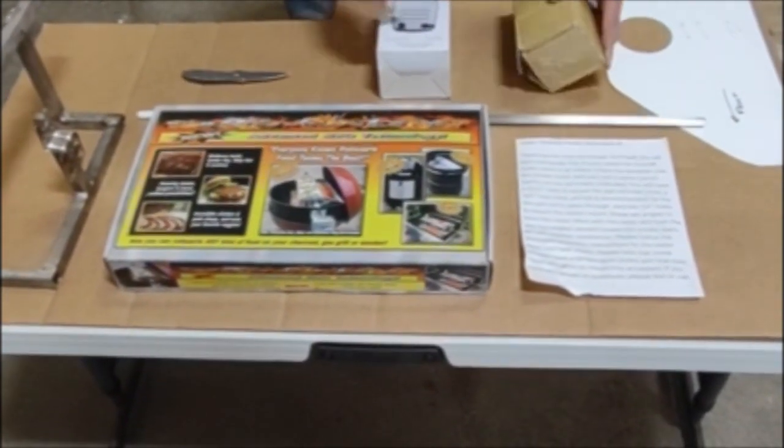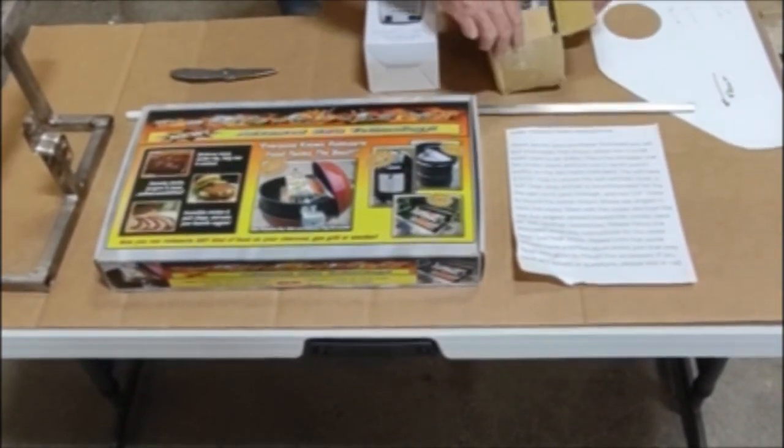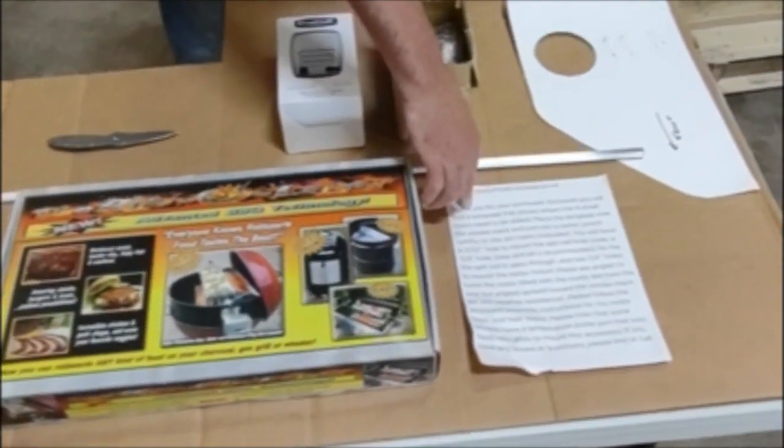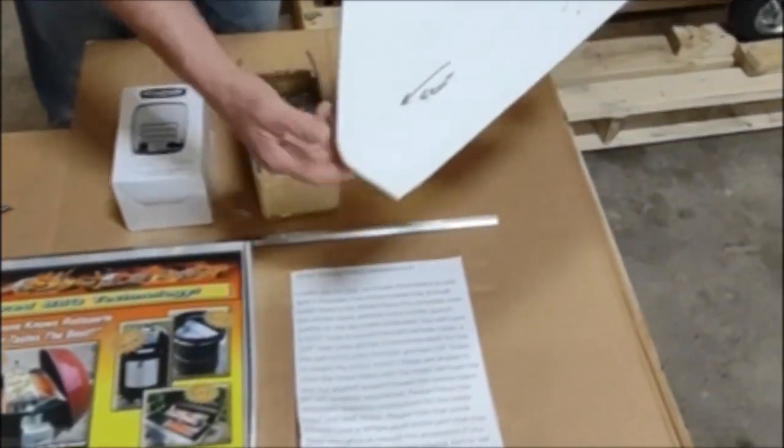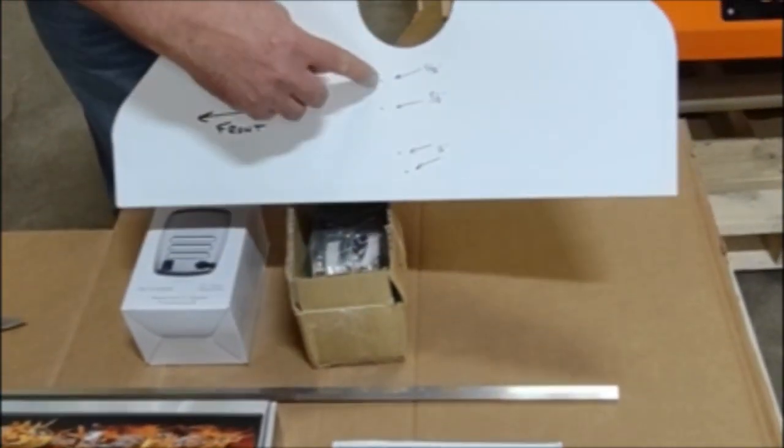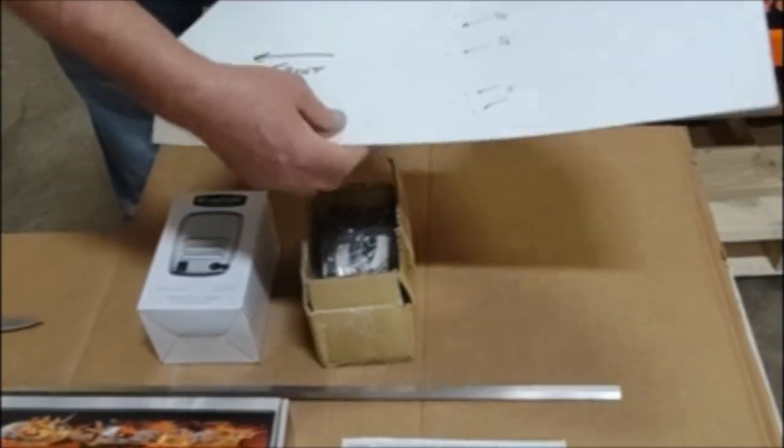The rotisserie parts come in a separate box. You get the instructions and you also get your template. This goes on your Yoder so that you know where to drill your holes.